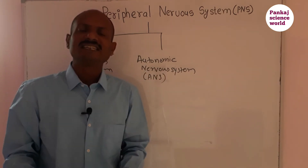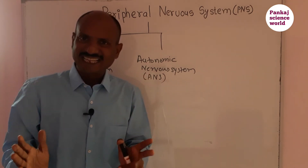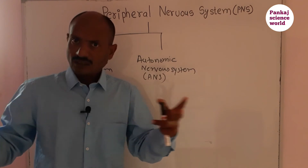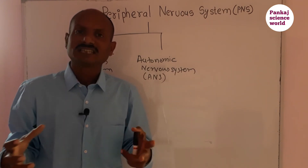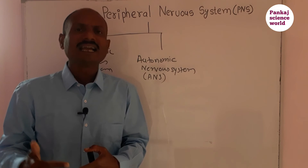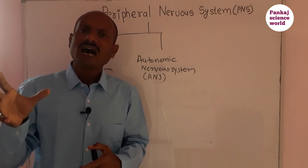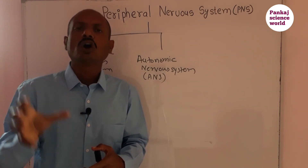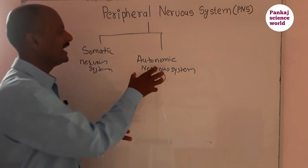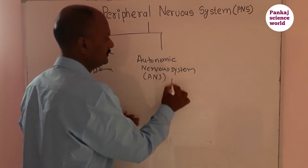It connects nerves with involuntary organs such as the heart, lungs, stomach, intestine, liver, bladder, and genitalia. It also includes various glands that perform involuntary activities, and these functions are not under the control of our conscious will.